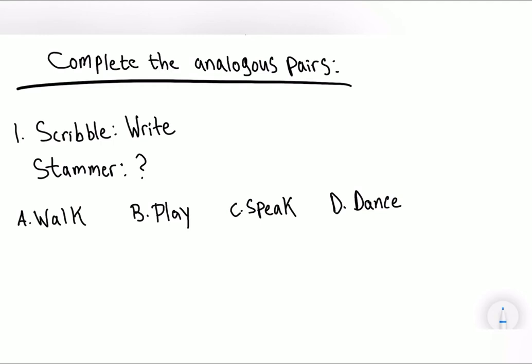So the question is, complete the analogous pairs. And the first one says, scribble, write, stammer, question mark. So basically you can think of it as a scenario. In school you would not scribble, you would write on your paper. In school you would not stammer, you would what? You would just speak.